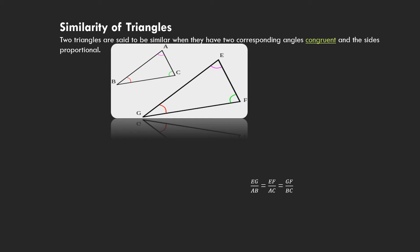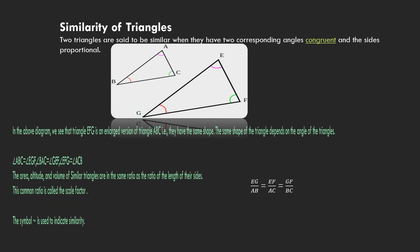Look at this figure. There are two triangles: triangle ABC and triangle EFG. In those two triangles, look at the shapes — the shapes are the same. We can see the corresponding angles are equal. Triangle EFG is an enlarged version of triangle ABC. They have the same shape. The same shape of a triangle depends on the angles of the triangles — if the angles are equal in both triangles, we get the same shape.